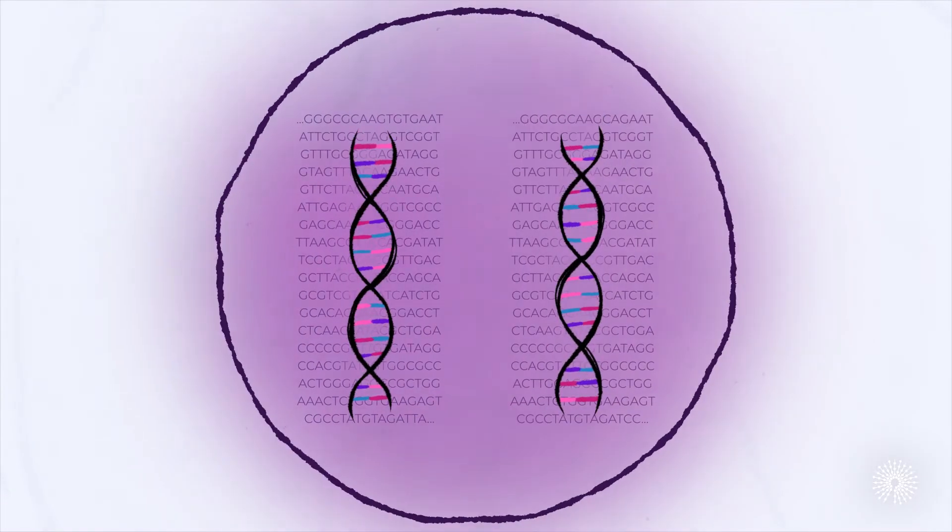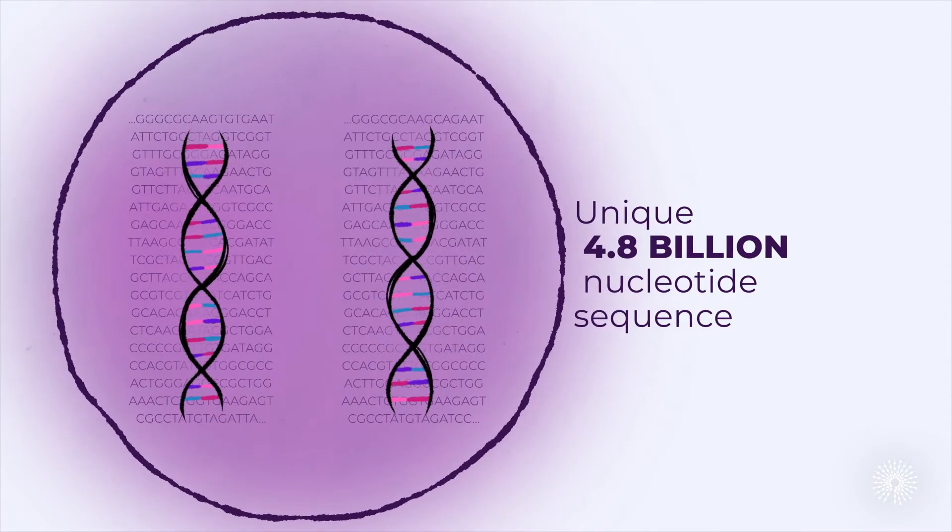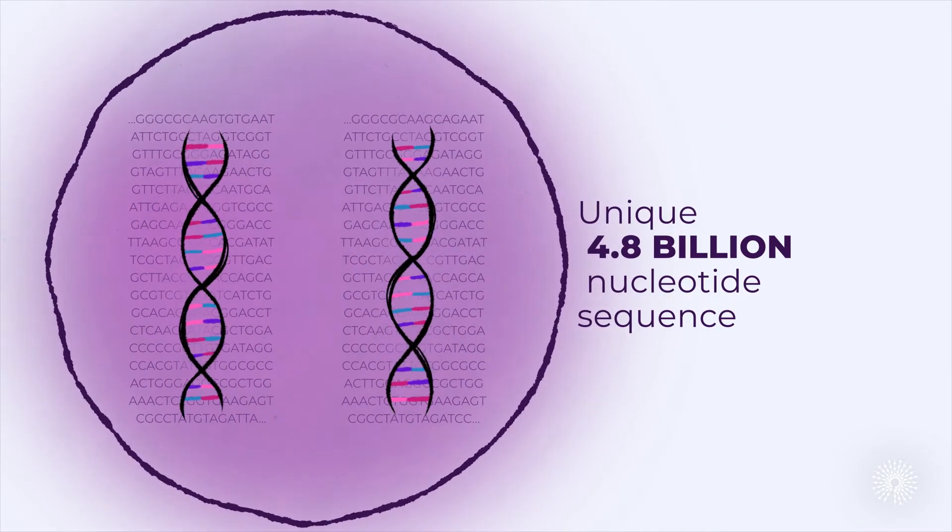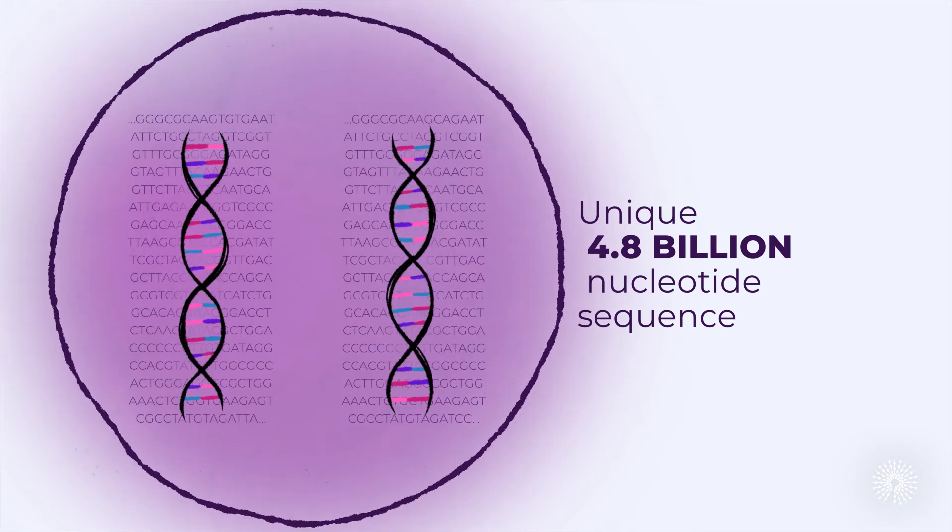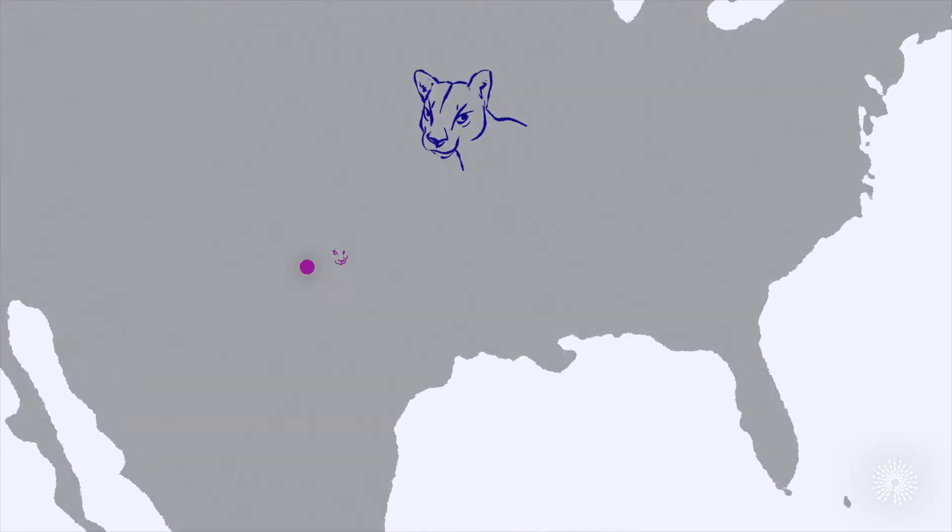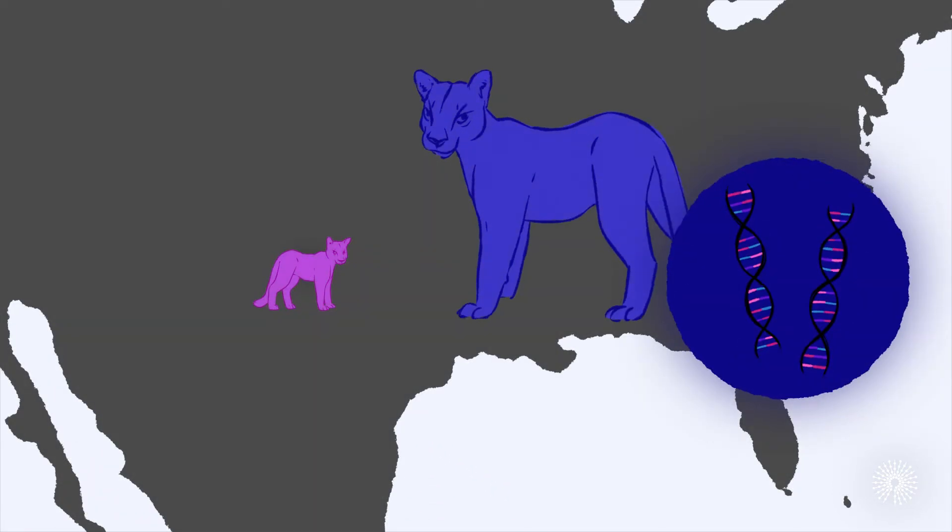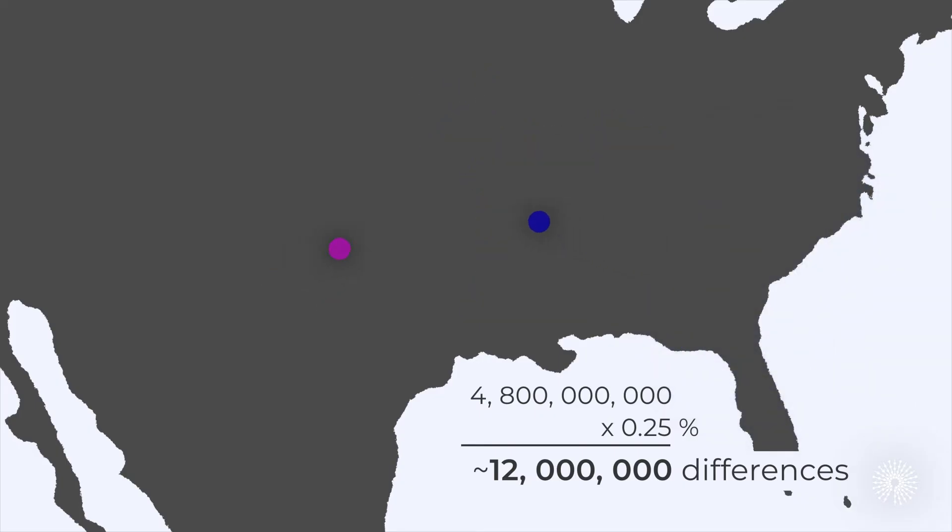This combination of around 4.8 billion nucleotides is entirely unique to each individual, which we'll represent with this pink color on puma 1. Let's say puma 2 is about a quarter of 1% different on average, meaning it has about 12 million sequence differences from puma 1. Imagine these two meet and have a kitten. Their offspring has a combination of each parent's genes.